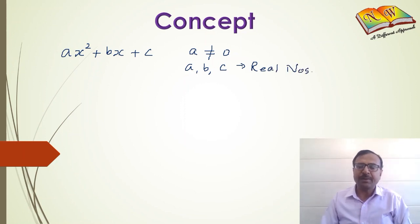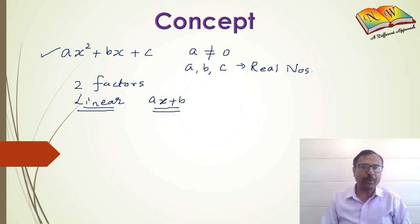Every quadratic polynomial has two factors and both these factors are linear. That means they are in the form ax plus b. There are two linear factors of every quadratic polynomial. When you have to express any quadratic polynomial like x square minus 4x minus 21, it will be expressed as a product of two linear factors.